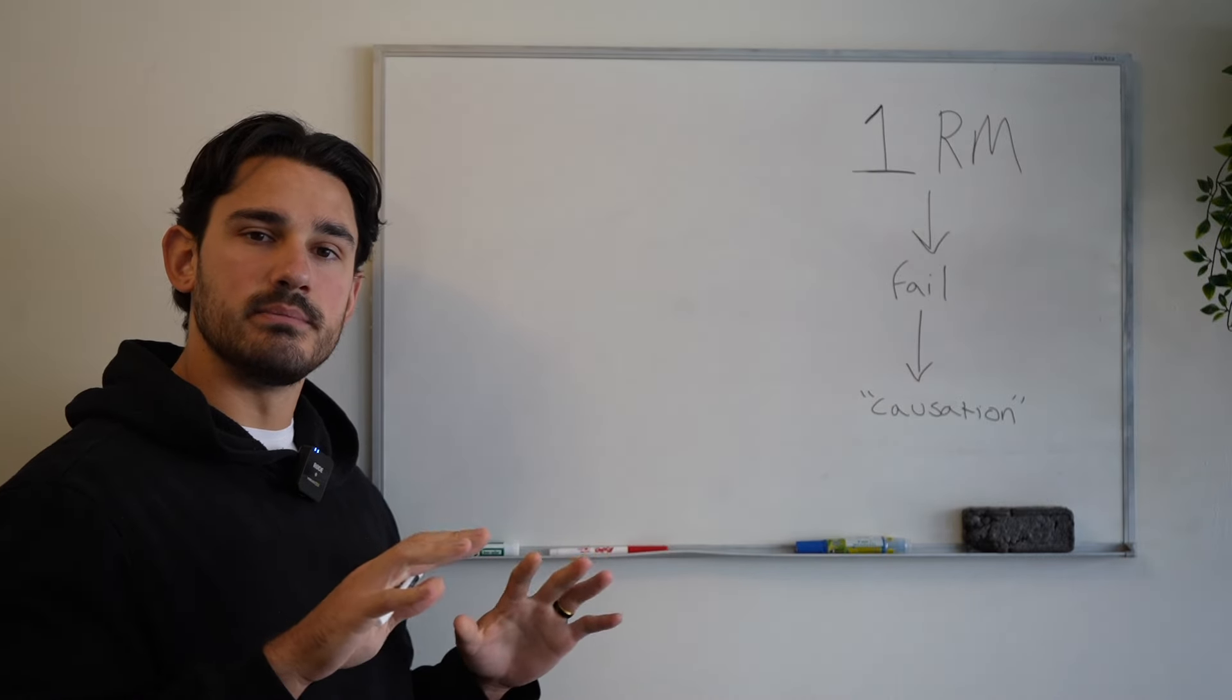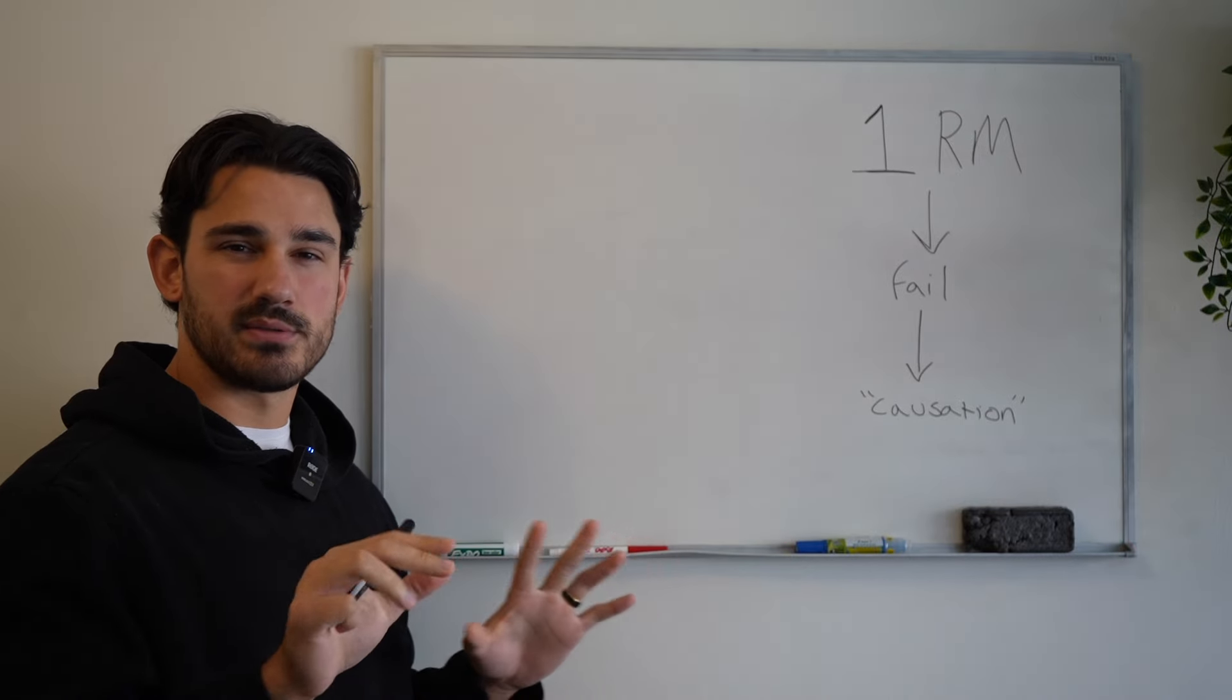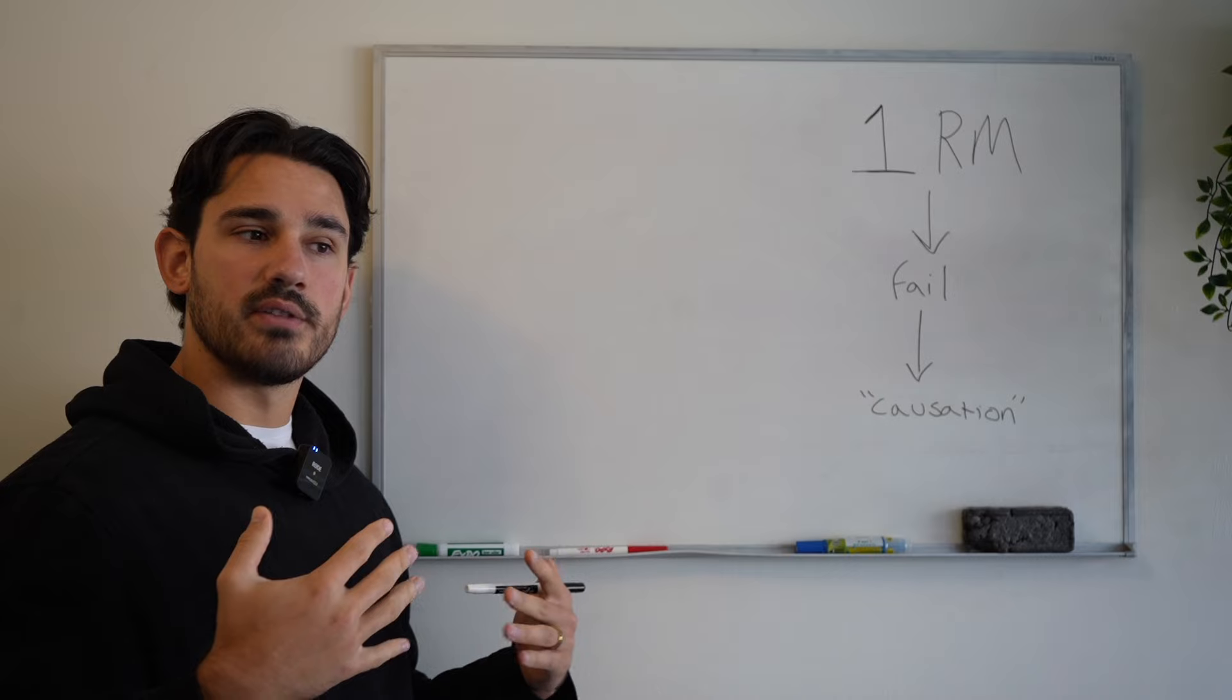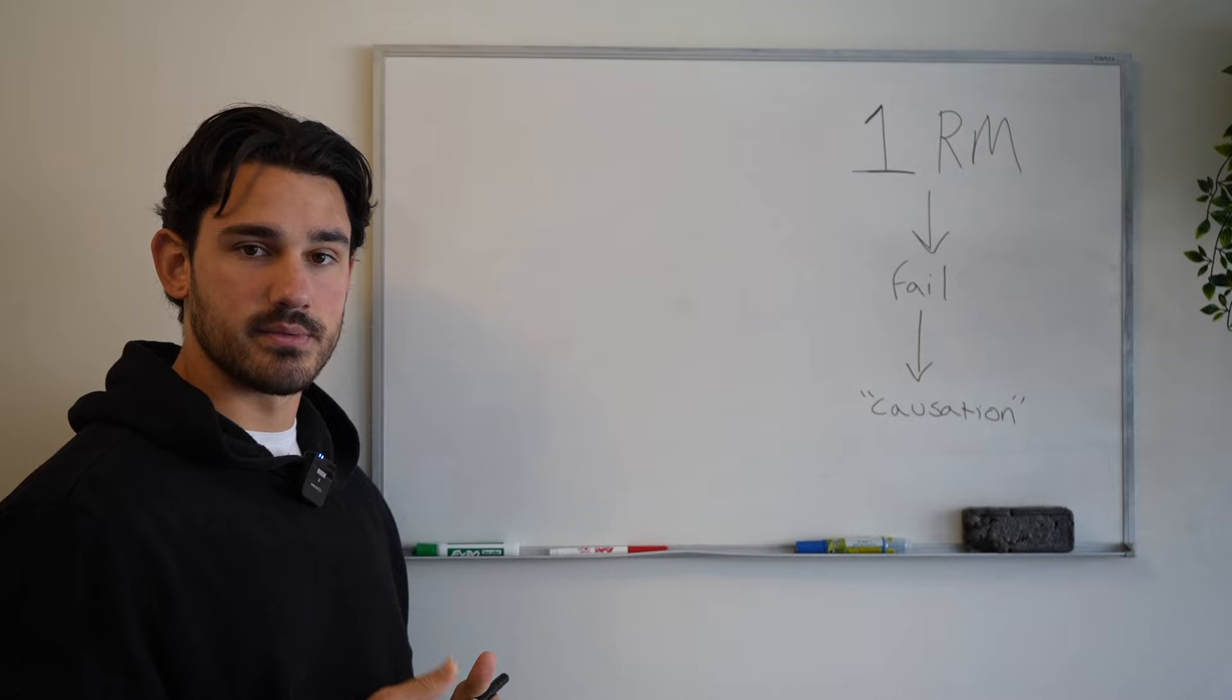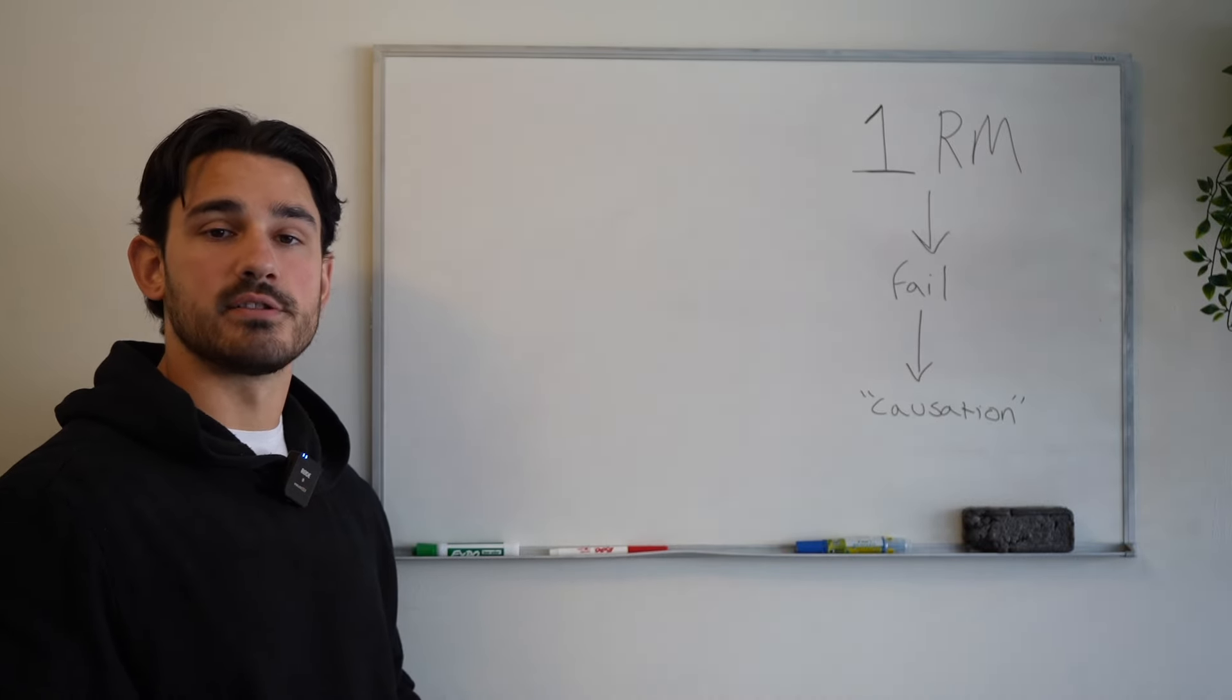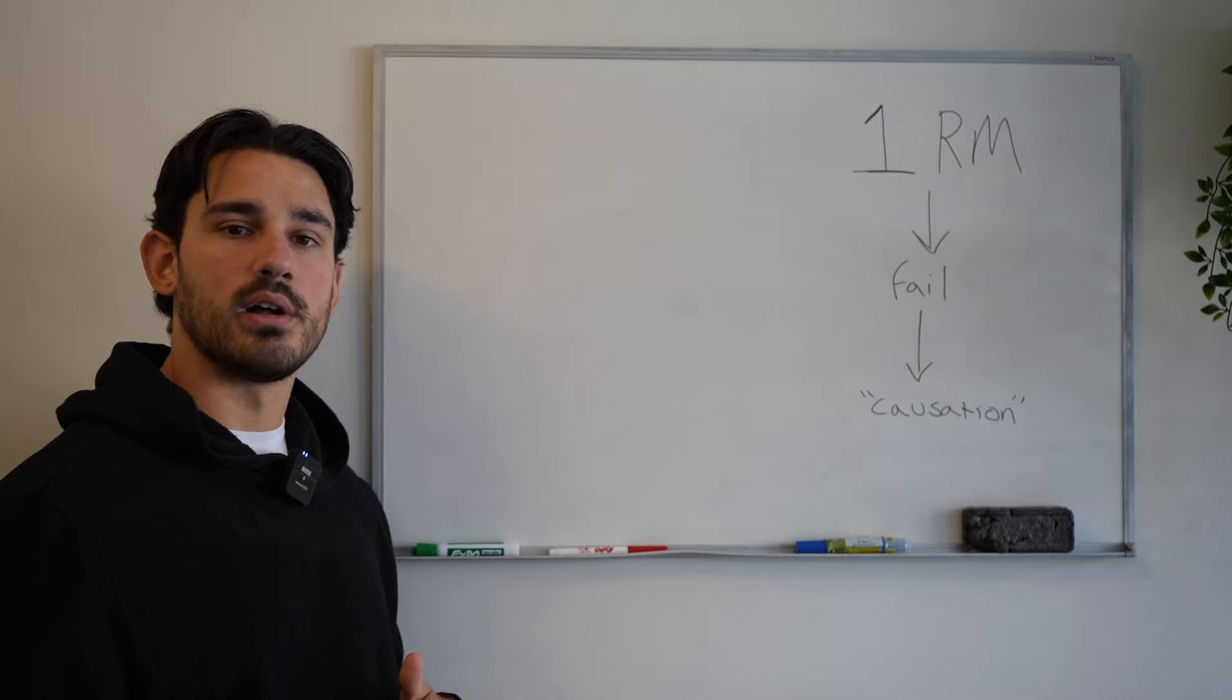Now this might seem confusing at face value, but to understand this we really just need to understand the difference between correlation and causation. So a good example might be if I walked into this room and I let out a massive fart as I walked into this room. Would that necessarily mean that my walking into the room was the cause of my fart? No, that happens simultaneously but it doesn't mean one caused the other.